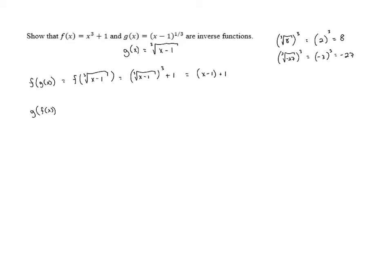Once we cancel out the cube root and the cubing, we're left with x - 1 + 1. We can remove the parentheses, and when we do that, the constant terms cancel and we're left with x.